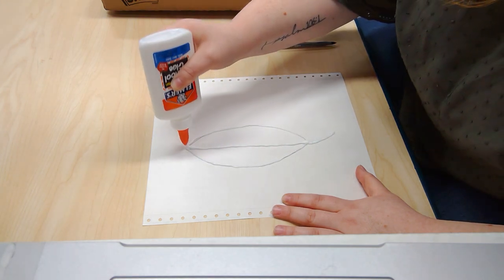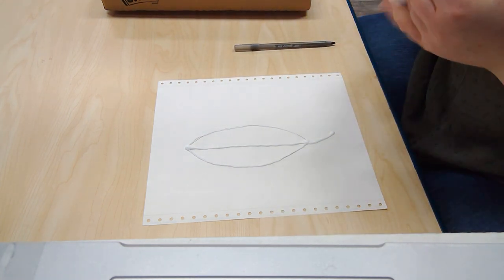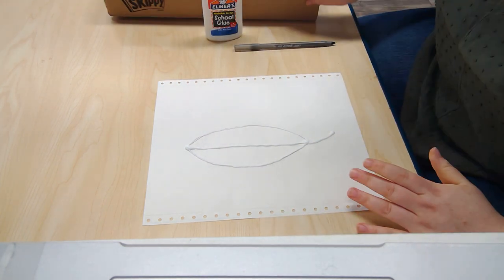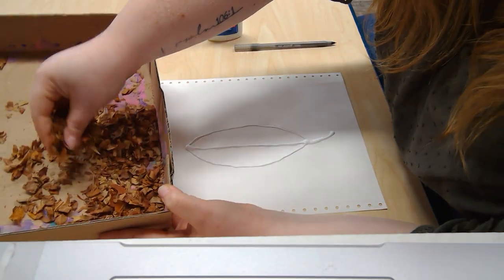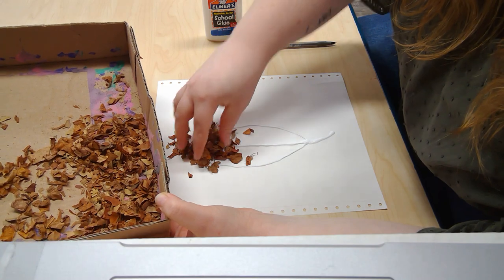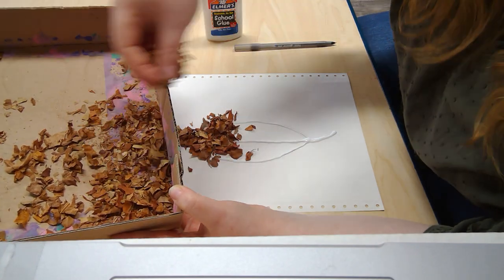There's my leaf with my glue. And the last thing I'm going to do is I'm going to take my crumpled up dry leaf pieces and I'm going to start sprinkling them on top of my paper with my glue.